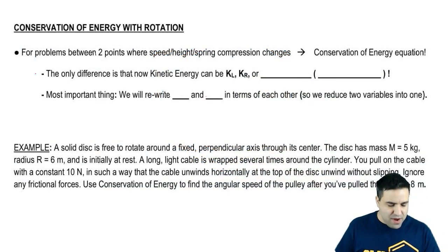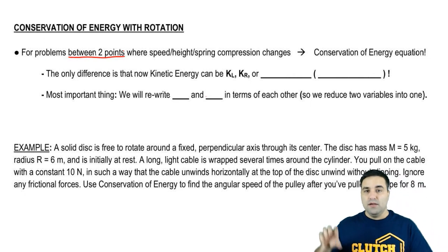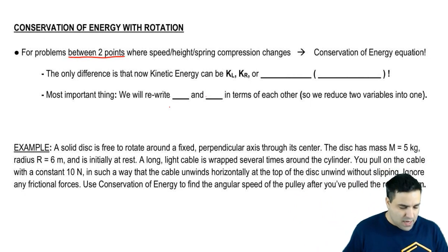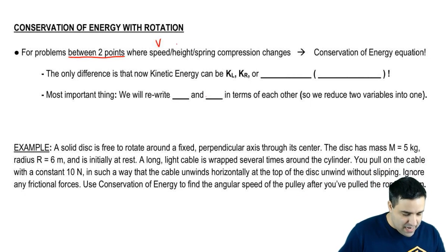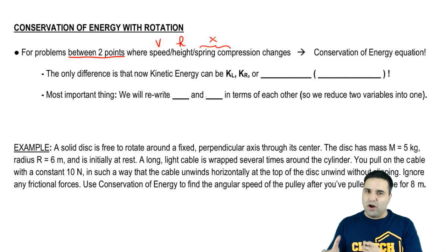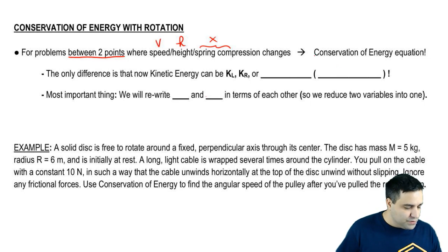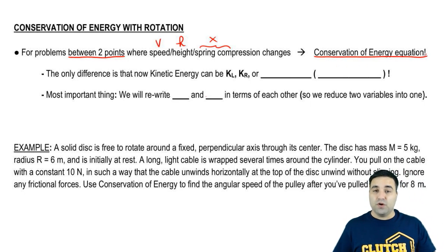You may remember that when you have a motion problem between two points—meaning the object starts here and ends up over here somewhere—where either the speed V, the height H, or the spring compression X changes, any combination of those three changes, we can use, most of the time, the conservation of energy equation to solve these problems.